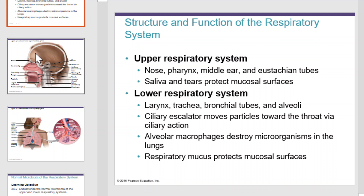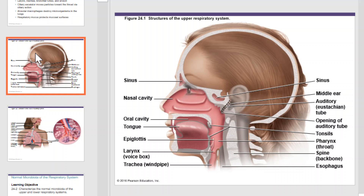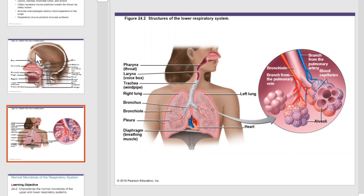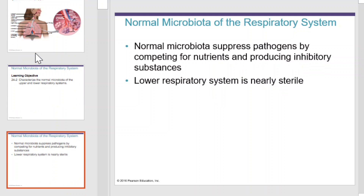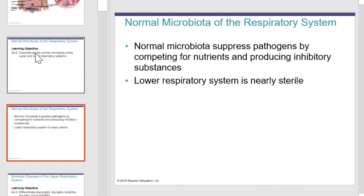This diagram illustrates the upper respiratory system, and this, the lower. Next, we'll examine the normal microbiota of the respiratory system. The normal microbiota of the respiratory system are not all that dissimilar to the normal microbiota of the skin. Their purpose is to suppress pathogens by competing for nutrients and producing inhibitory substances. The lower respiratory system is nearly sterile.